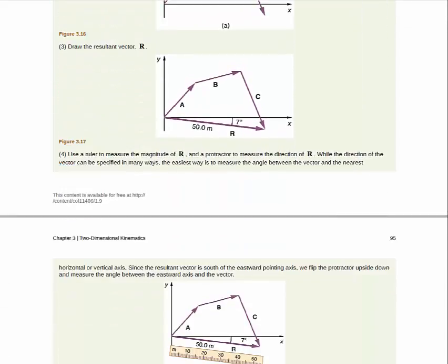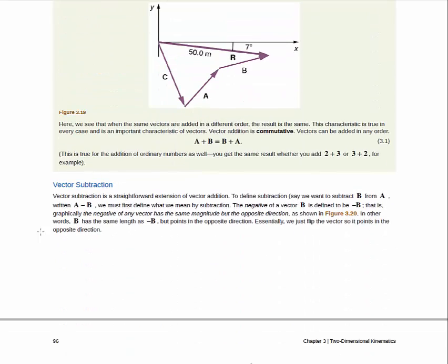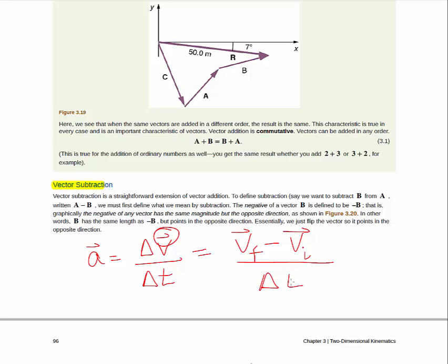You have some more examples, which are all beneficial. Then, they get into the idea of vector subtraction, which is going to be important, because you've seen that, for example, acceleration is the change in velocity over the change in time. And this thing's a vector. So, you're looking at a vector subtraction in the definition of velocity. We need to make sure we understand vector subtraction. That's what begins here on the bottom of page 95.